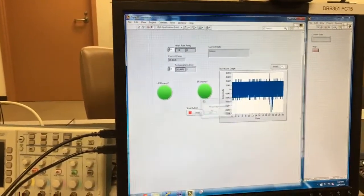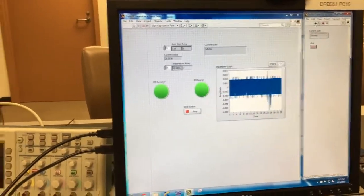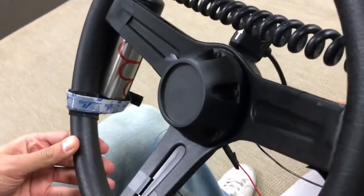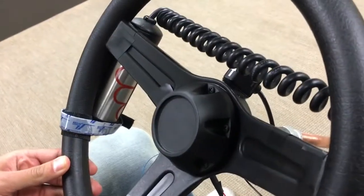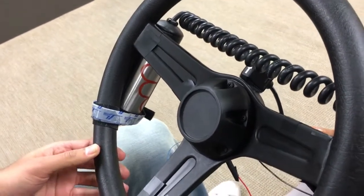The next thing that will happen is this will run our program to emit the current. As you can see the steering wheel is now vibrating because the motors on the back have a current running through them. This is sufficient to alert the driver of his condition and wake him up during his drive.